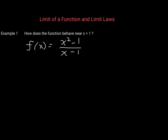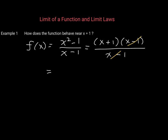But what we can do is simplify this function. The numerator is a difference of two squares, so it factors as (x + 1)(x - 1). We see a common factor of (x - 1) that divides out, and so this rational function simplifies to x + 1, which is linear — as long as x is not equal to 1. The graph of x + 1 is a diagonal line with slope 1 and y-intercept 1, except there's going to be a hole in our graph where x is 1.